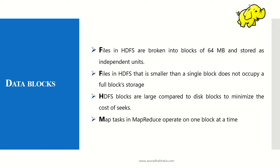Map tasks in MapReduce operate on one block at a time. So whenever we are performing a MapReduce operation, it is done on a single block of 64 MB only.